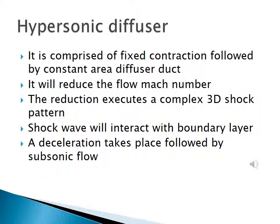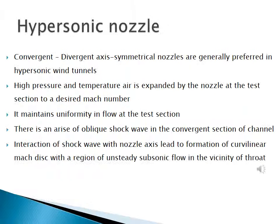The diffuser reduces the flow Mach number, which executes a complex 3D shock pattern. Shock waves interact with the boundary layer, and a deceleration takes place followed by subsonic flow. Waves in the convergent section of the channel cause interaction of shock waves with the nozzle axis, leading to formation of a curvilinear Mach disk with a region of unsteady subsonic flow in the vicinity of the throat.